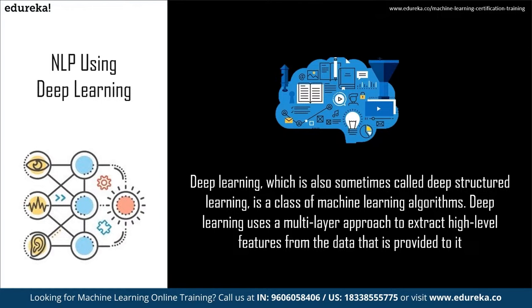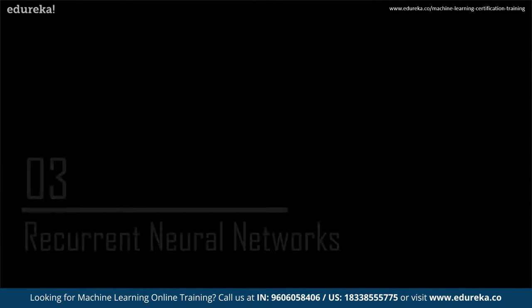We can perform NLP using deep learning in one of two ways: using pre-trained models such as Google's Word2Vec or GloVe (Global Vector) models, or training our own model. Training your own model requires a very large amount of data and significant compute power. In most cases, we will be using pre-trained models.